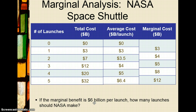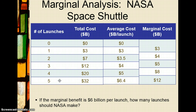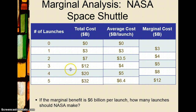At three launches, the marginal cost is less than the marginal benefit, which is how we make decisions — we only take an activity if the marginal benefit is at least as great as the marginal cost. The fourth and fifth launches do not satisfy that criteria, so we should never have taken them. That's why it's so important to focus on marginal costs and benefits rather than average costs and benefits.